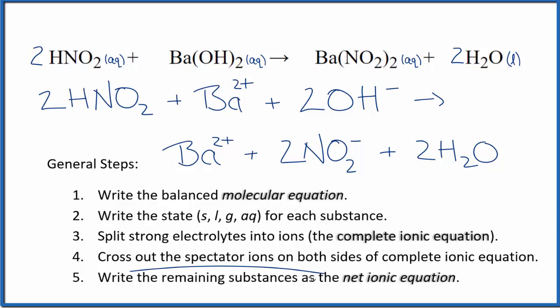Now we can cross out the spectator ions - they're on both sides. In the reactants, I have the barium ion. In the products, I also have the barium ion. That's the spectator ion, so we cross it out.